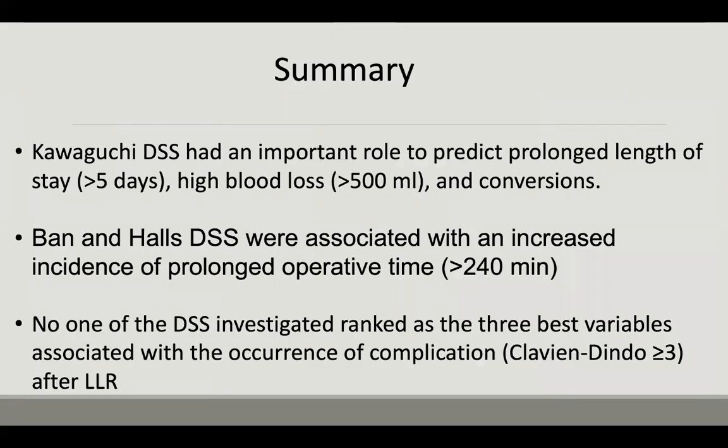In summary, the Kawaguchi difficulty score had an important role in predicting prolonged length of stay, high blood loss, and conversions after laparoscopic liver resection. BAN and ALS were associated with increased operative time. None of the difficulty scores investigated ranked among the variables associated with the occurrence of complications after laparoscopic liver resection.